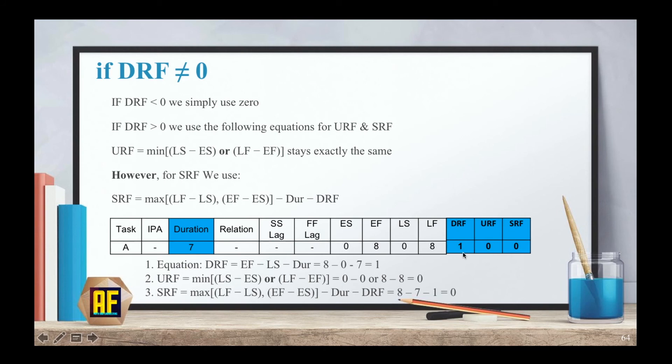So here is our new table. Our DRF is one, our URF is zero, and our SRF is zero. Now, what I would advise you to do is to try and change the numbers and try to solve it a bit on your own, just to see that you kind of get the grasp for it. And basically, this is all you need to know for the precedence diagram or network. And we are going to take it to the next level in the next video. Stay tuned.